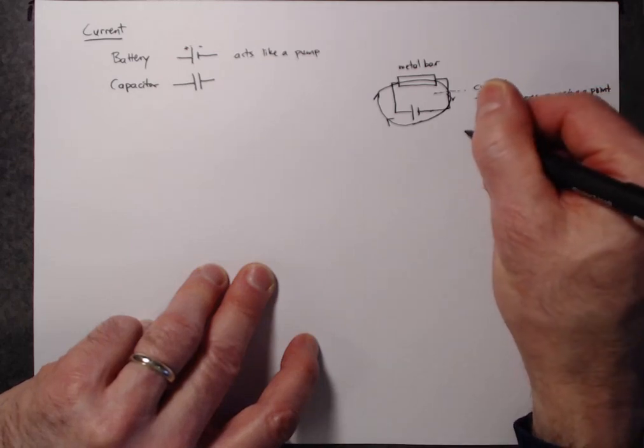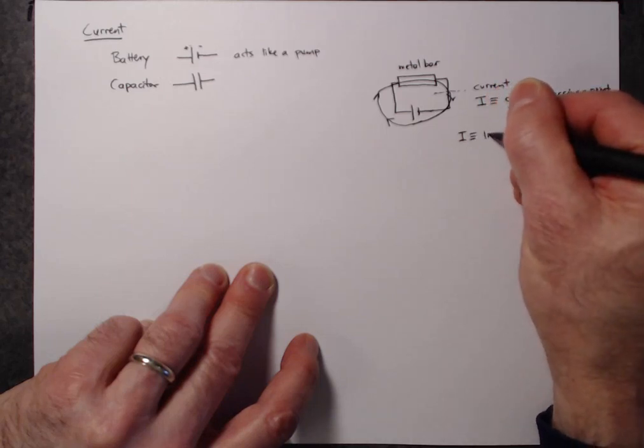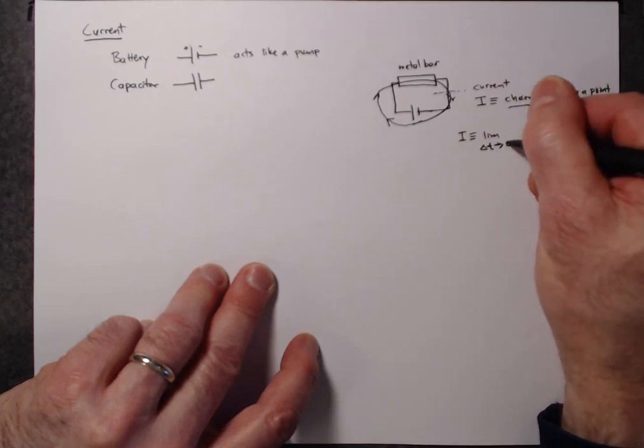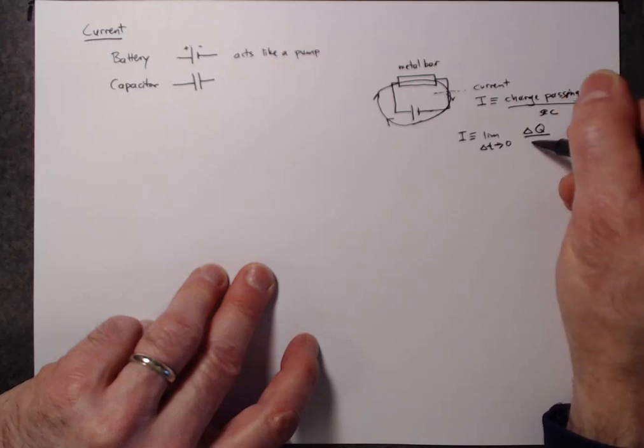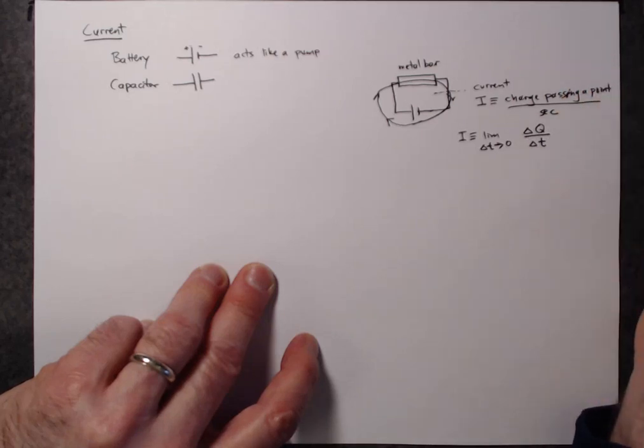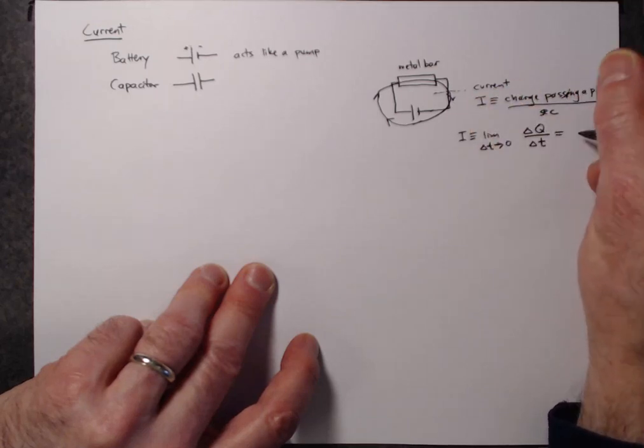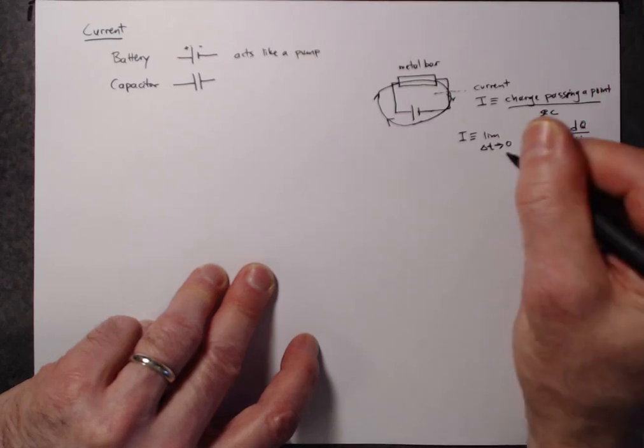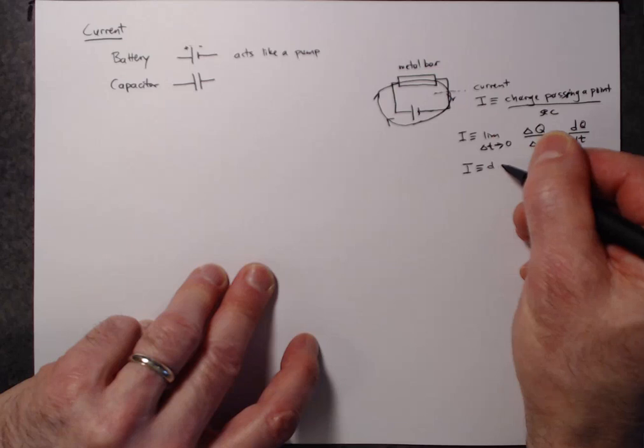Mathematically, I could say that I is equal to the limit as a time interval approaches zero of the amount of charge delta Q passing this point divided by the time delta T. That, of course, is a complicated way of writing the derivative of the charge as a function of time. So that gives us the equation that I is defined to be the derivative of charge with respect to time, dQ/dt.